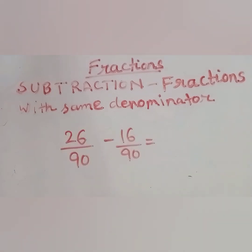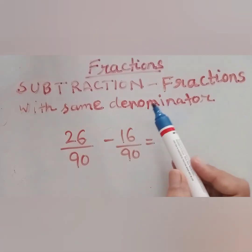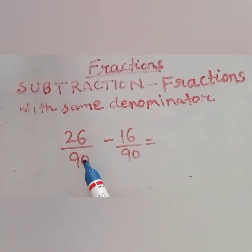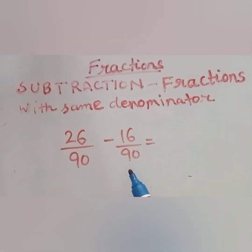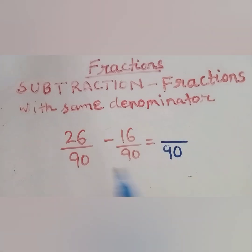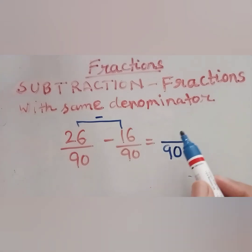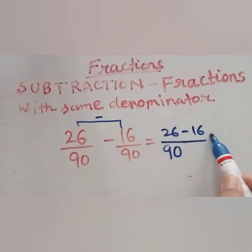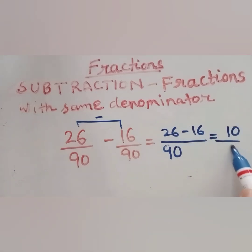Let us take another example of subtraction. Here again the denominator is same, that is 90. The fraction is 26 by 90 minus 16 by 90. So first we will write 90 in the denominator, and in the numerator we will simply do subtraction: 26 minus 16, which gives 10 by 90.